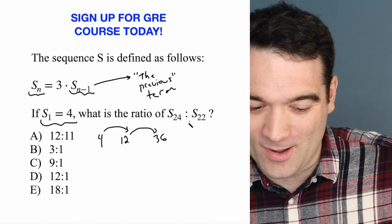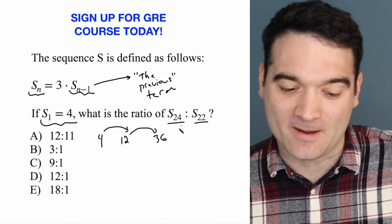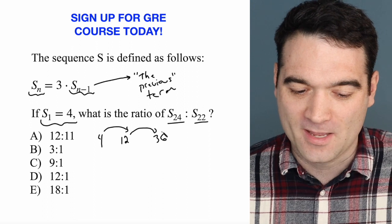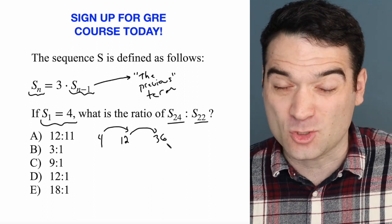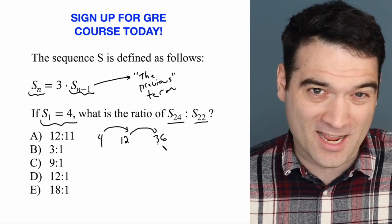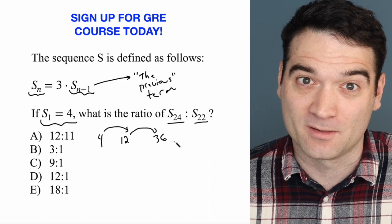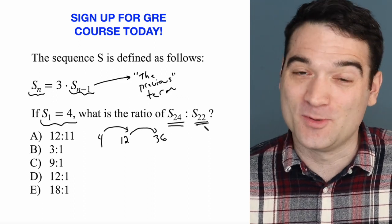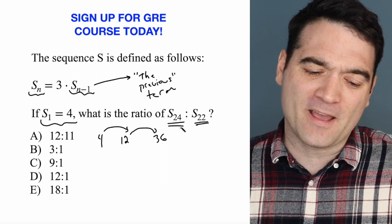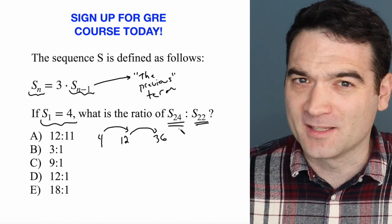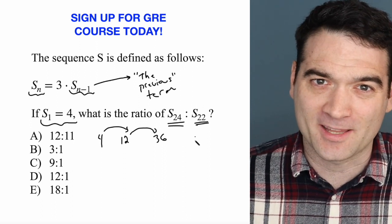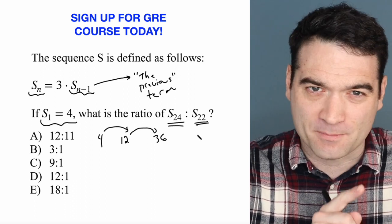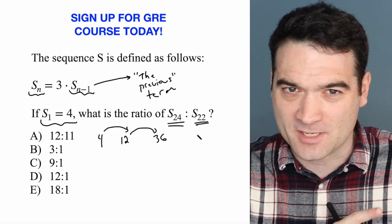But what is a little wild are these numbers here: S sub 24, the 24th term. If I'm going to multiply by 3 twenty-four times, I'm going to have a really big number. And 22 isn't much better. In fact, these numbers are so big that your GRE calculator probably won't be able to handle them. And even if it could, it would take forever to plug in 3 times 3 times 3 times 3.